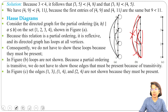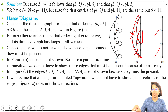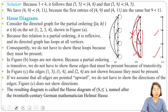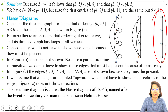After removal of the transitive edges, all directions are upward, so we don't need to show the arrows either. We can remove the arrowheads. After this removal, we get our final diagram — and it is called a Hasse diagram, named after the German mathematician Helmut Hasse, who developed it.